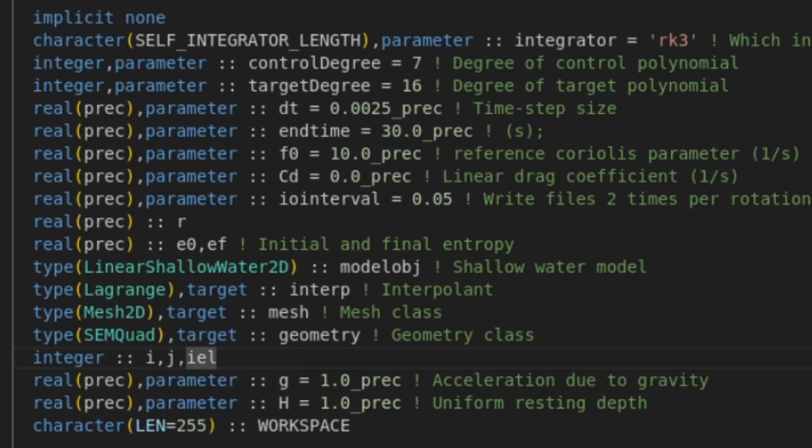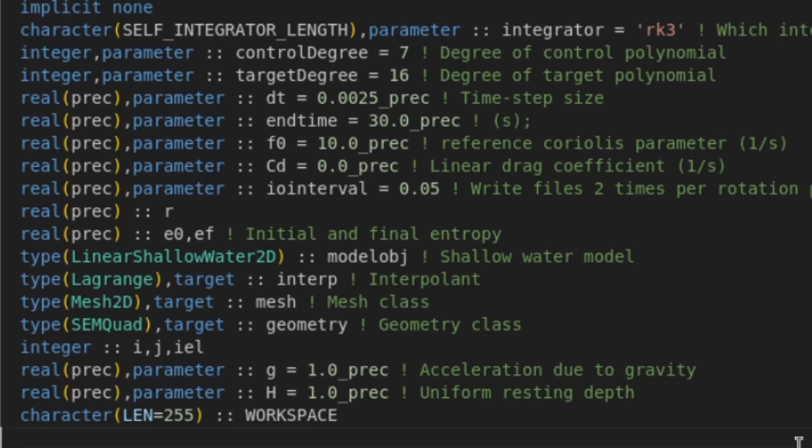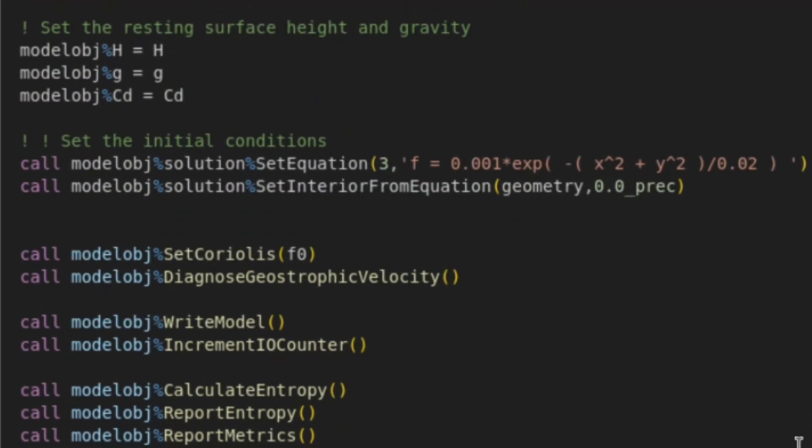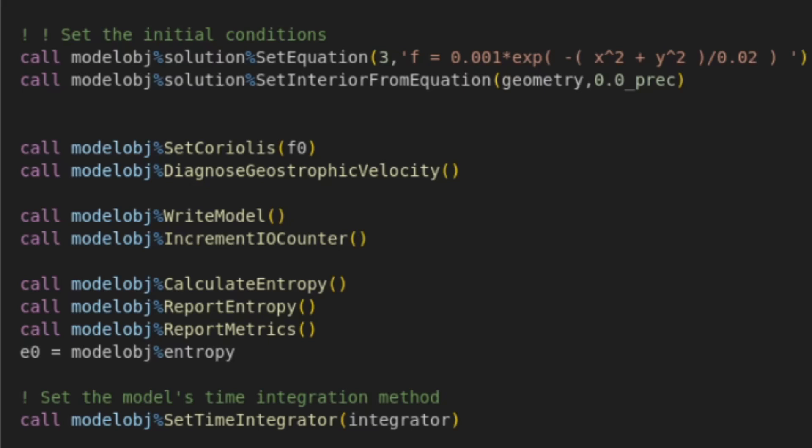We design a main program where we set the Coriolis parameter to a value of 10, and we set the time step size so we're not violating the CFL condition associated with the gravity waves traveling through the smallest length scales of our domain. As stated, we'll set the initial condition for the free surface height using a Gaussian. We'll define our Coriolis parameter as a constant value, and then we'll use the DiagnoseGeostrophicVelocity function to set the initial condition for the velocity fields.